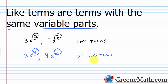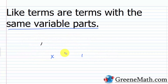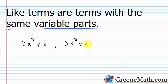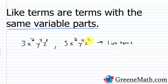If you have more than one variable, it gets more complicated. Each variable has to be present, and each copy of that variable has to have the same power. For example, 3x squared yz and 5x squared yz are like terms because we have x squared and x squared, y to the first and y to the first, z to the first and z to the first. If I changed one z to z cubed, I don't have like terms — because I'd have z to the first and z cubed. All it takes is one to fail.